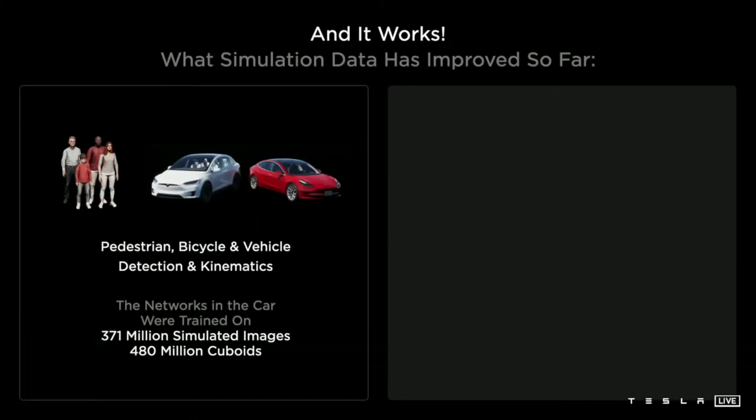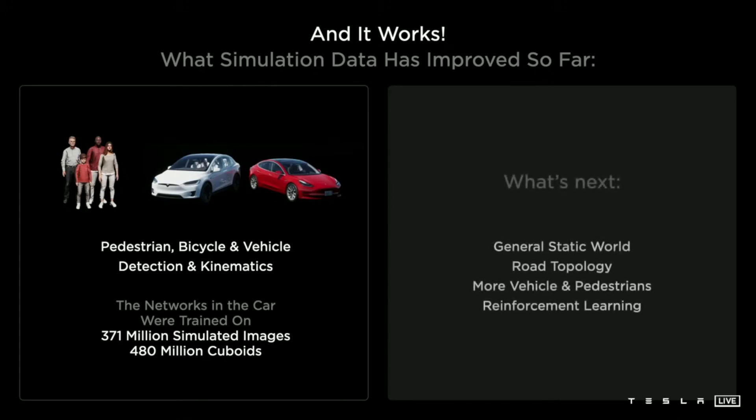This is not just theoretical — networks trained in the car already use simulation data. We used 300 million images with almost half a billion labels, and we want to crush all the tasks coming up over the next several months. With that, I invite Milan to explain how we scale these operations, build a label factory, and produce millions of labels.